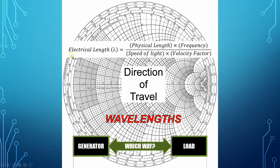Here is the equation to calculate the electrical length in wavelengths for a piece of transmission line of any description. You take the physical length of the coax, multiply it by the frequency in hertz, and divide that by the speed of light times the velocity factor. Be careful: if you measure physical length in inches, the speed of light must be in inches per second; if in feet, then feet per second. Frequency is in hertz, and velocity factor has no dimensions. This gives you the electrical length of your particular piece of coax.